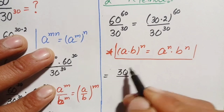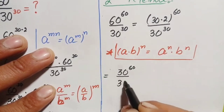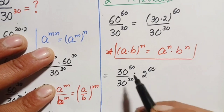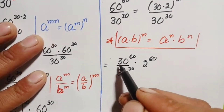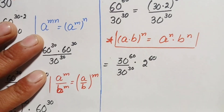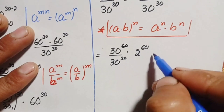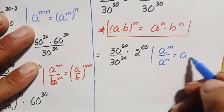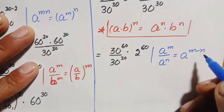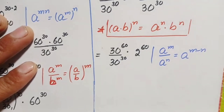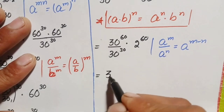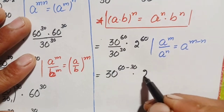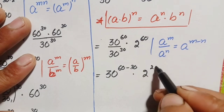Using this identity, the numerator becomes 30 raised to power 60, divided by 30 raised to power 30, times 2 raised to power 60. These two numbers in the fraction have the same base, so we apply the identity: a raised to power m divided by a raised to power n equals a raised to power m minus n. The result is 30 raised to power 60 minus 30, which is 30 raised to power 30, times 2 raised to power 60. We can write 60 as 2 times 30.